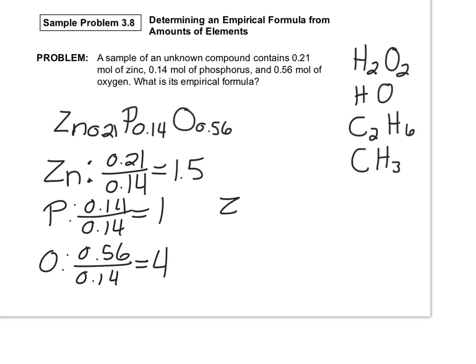Now I'll write another formula using those numbers: Zn1.5P1O4. I still have a decimal number, 1.5.